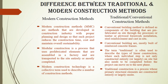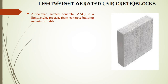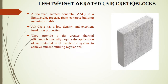Traditional construction is a process whose primary structural elements are constructed largely on site. Some of the modern construction methods or techniques include: first, construction with lightweight aerated or aircrete blocks. Autoclaved aerated concrete is a lightweight precast form of concrete building material which is suitable for construction. Aircrete has a low density and excellent insulation properties, providing far greater thermal efficiency.